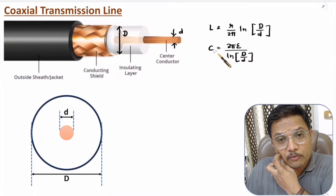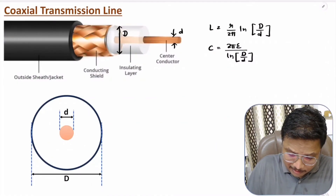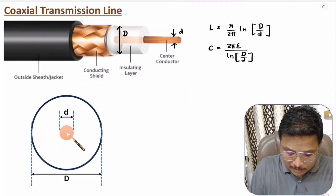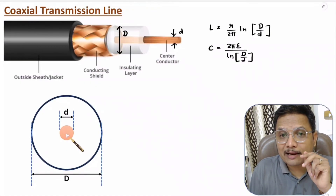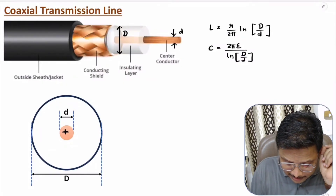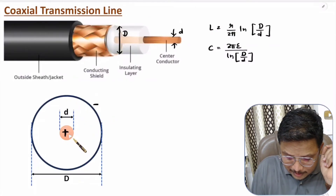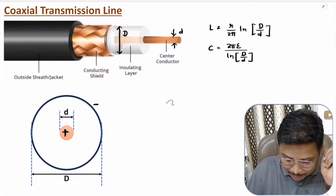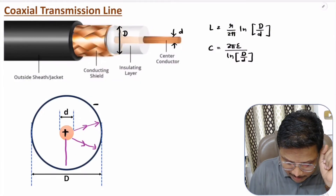Now I will explain how electric field and magnetic field are present in the coaxial transmission line. The electric field depends on polarity. Considering current passing through the inner conductor in the outward direction as positive, the outer shield will be negative. The electric field emerges from the positive inner conductor and goes towards the negative outer conductor, like this.